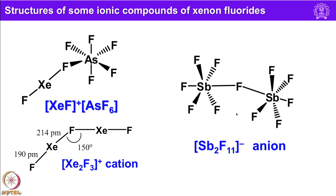The structures of [XeF]⁺[AsF6]⁻ and [Xe2F3]⁺ and the [Sb2F11]⁻ anion are shown. Whenever halides are bridging, they should never be drawn as straight — they should be drawn at an angle much closer to tetrahedral, because each bridging halide ion has two lone pairs intact on it.